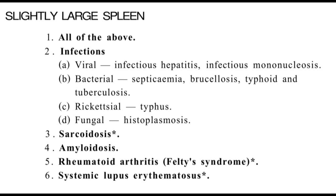In sarcoidosis, amyloidosis, and rheumatoid arthritis, the spleen will also respond. In systemic lupus erythematosus, there will also be a slightly enlarged spleen. As far as generalized conditions are concerned, like lymphoma and chronic myeloid leukemia, in malaria and kala-azar, there is enlargement of the spleen as well, but it may vary — you can see mild to moderate and even sometimes huge spleen in these conditions.